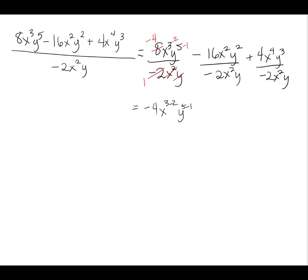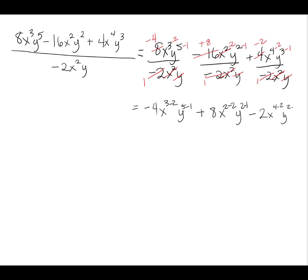Next term: -2 goes into -16 a positive 8 times; x² over x² is x^(2-2); y over y² is y^(2-2) — wait, y² over y is y^(2-1) — giving +8x^(2-2) · y^(2-1). Last term: -2 goes into +4 negative 2 times; x⁴ over x² is x^(4-2); and y³ over y is y^(3-1), giving -2 · x^(4-2) · y^(3-1).